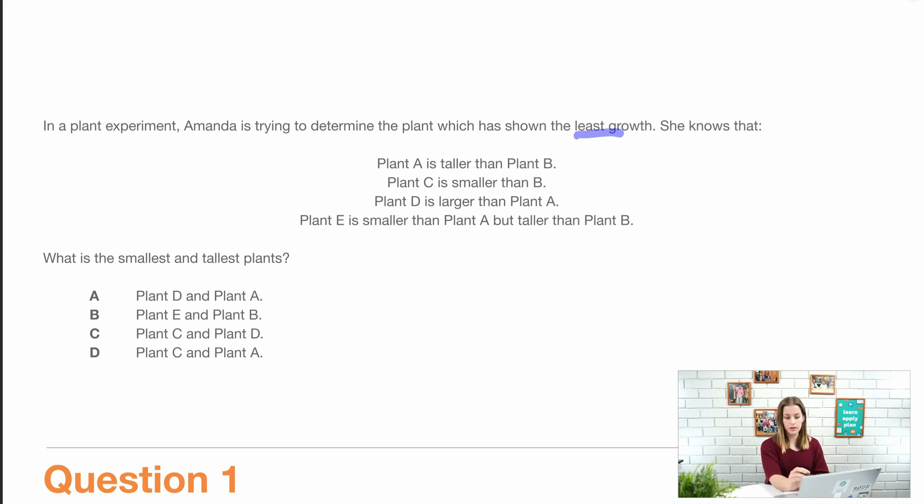What she does know is that plant A is taller than plant B, plant C is smaller than plant B, plant D is larger than plant A, and plant E is smaller than A but taller than plant B.